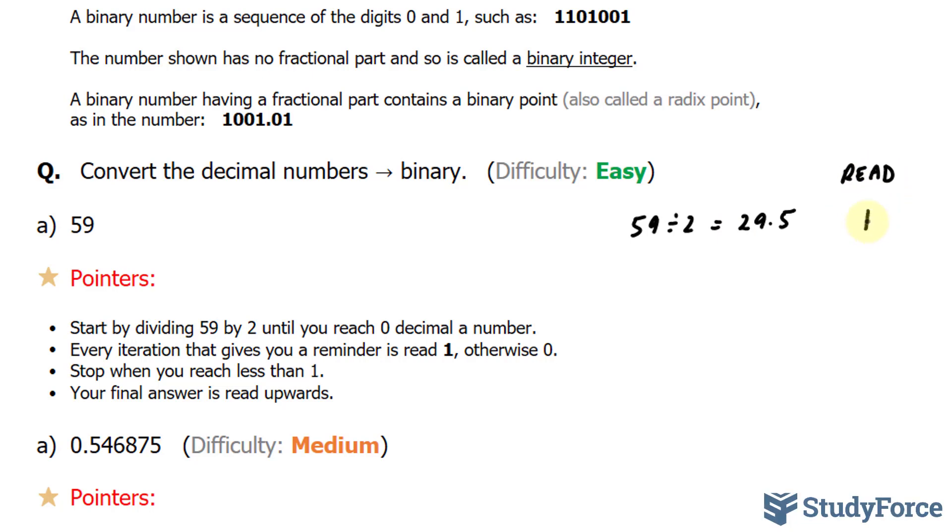Then in your next iteration, only take the whole part of the number. So next we'll take 29 and divide that by 2. 29 divided by 2 gives you 14.5. Once again, a decimal is produced, so that's read as 1. We'll take 14 next. 14 divided by 2 is 7. 7 gives us no remainder, so that's read 0. 7 divided by 2 gives us 3.5. There's a remainder there, that's a 1. 3 divided by 2, notice that I'm only taking the whole numbers.